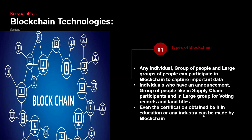Any individual or large group of people can participate in a blockchain to capture important data, because we need people for consensus — the majority is not going to be lying. Individuals with an announcement to the group participate in a large group for voting, and for land titles. For example, when you buy a land and register the title, instead of only the registrar telling you, if thousands of people are watching, it is valid.